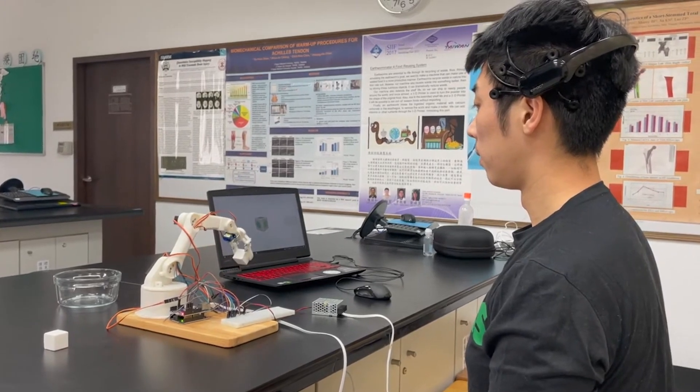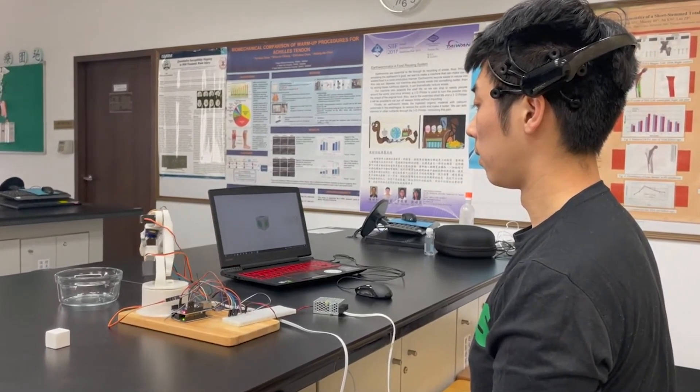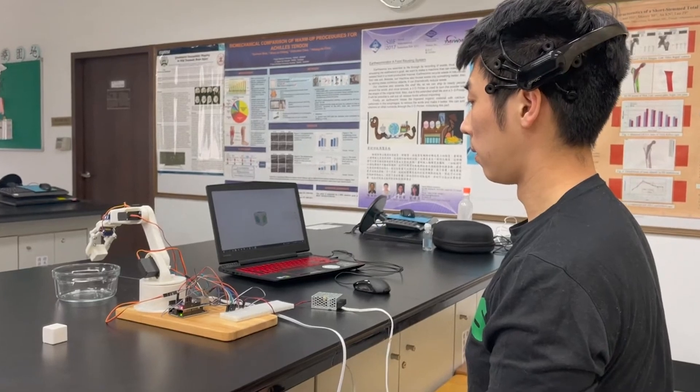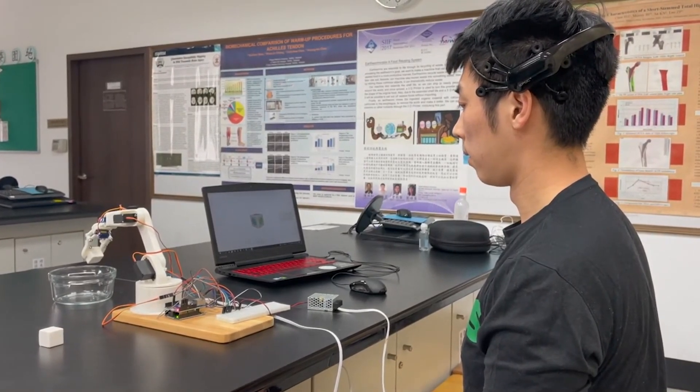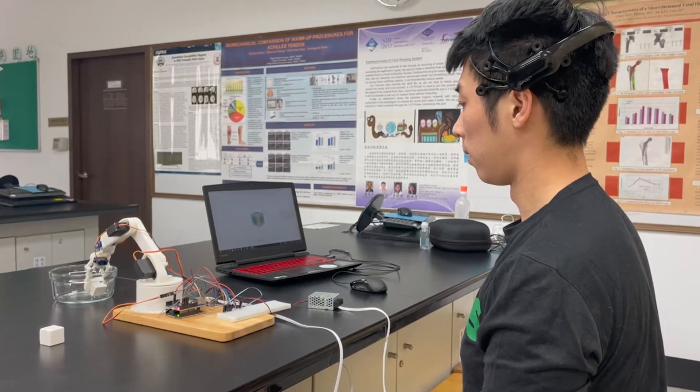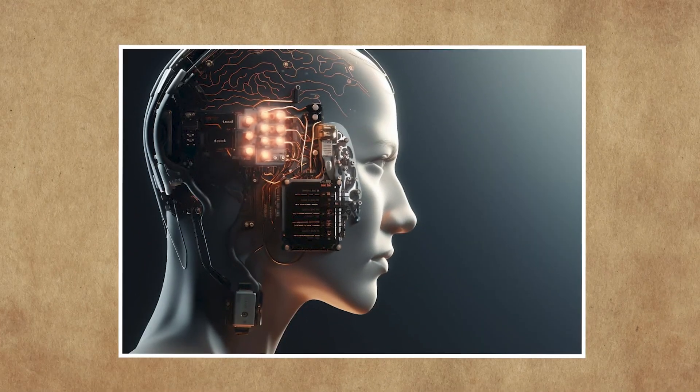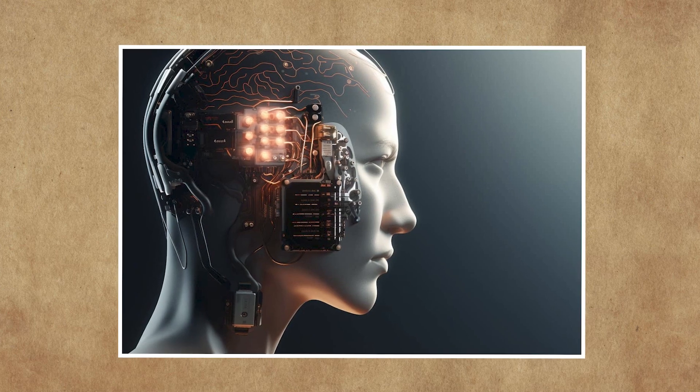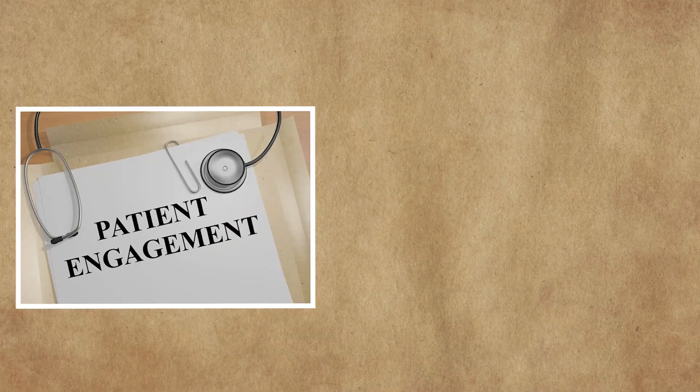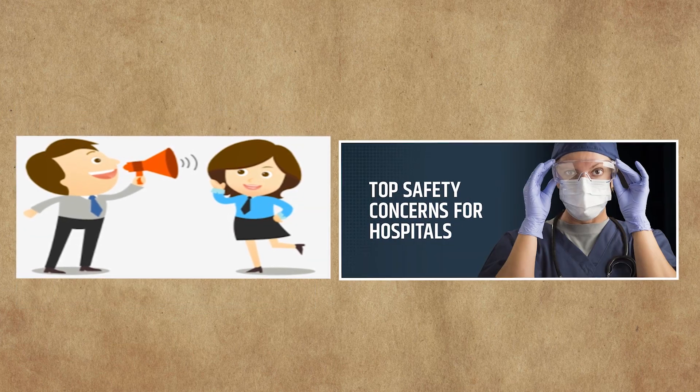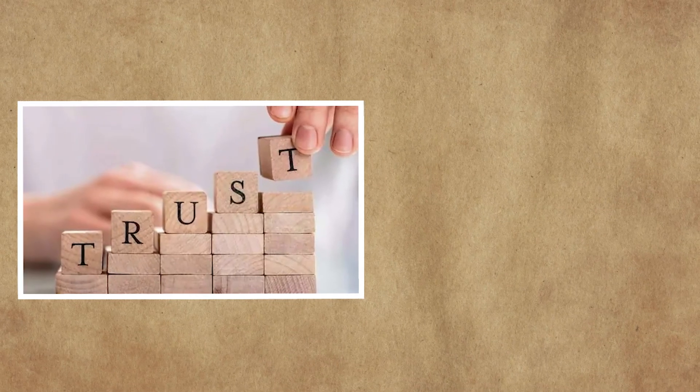It's important to recognize that the landscape of brain-machine interfaces is rapidly evolving, and new developments may have transpired since then. Furthermore, ongoing research in academia and other industries contributes to the expanding realm of neurotechnology. As Neuralink progresses with human trials and potential future deployments, ongoing engagement with patients, clear communication, and addressing ethical and safety concerns will be essential for building public trust and acceptance.